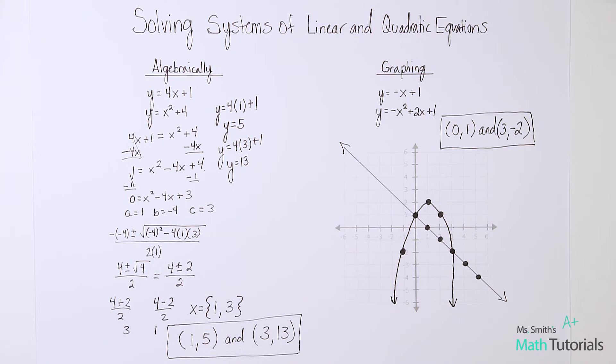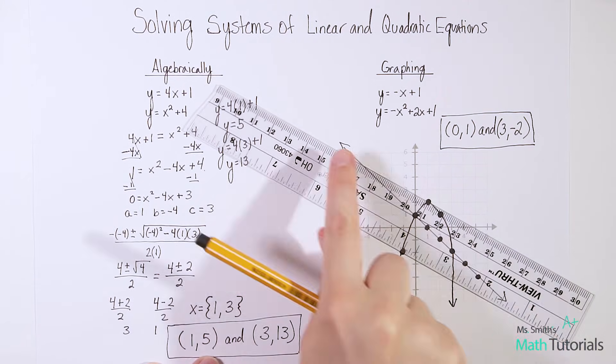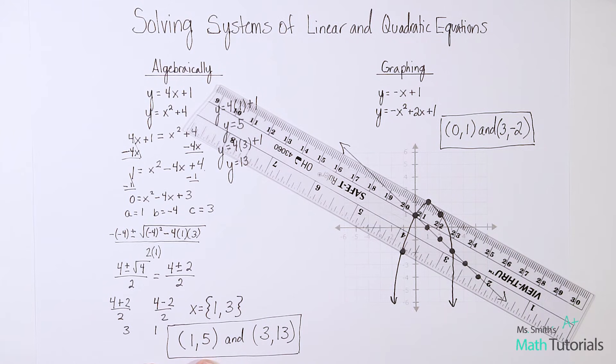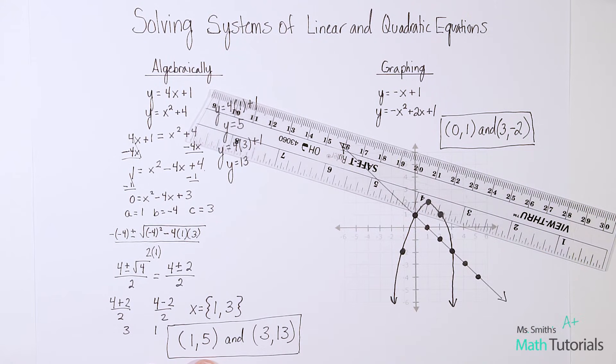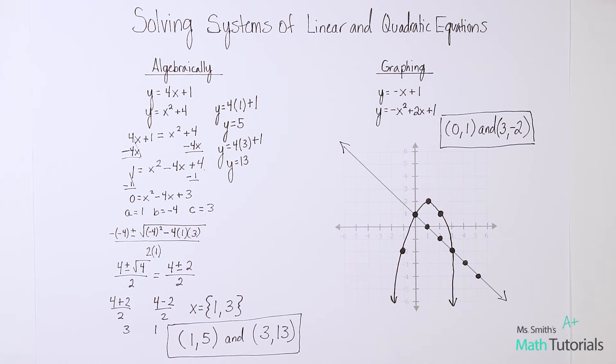Now it's important to note that these could intersect twice, like we see here. It could only intersect once, like what if I had a line, and it just barely touched one point, and then it just kept going. So that would be an example of if they only had one solution, or my linear line could be totally up here, and not ever intersect that parabola. And that would be no solution. So you can have lots of different types of answers within those three parameters. One solution, no solution, or two solutions. Those are your three options.